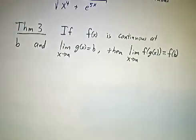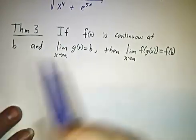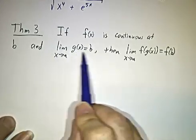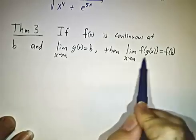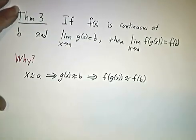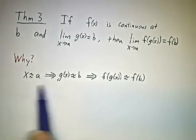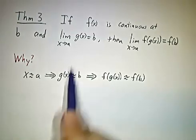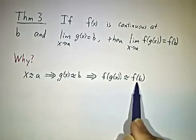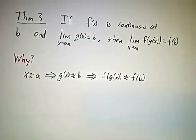Last, we can use these for continuity to compute limits. If f is continuous at b and the limit of g(x) is b, then the limit of f(g(x)) is f(b). Because if x is close to a, then g(x) is close to b, that's what this limit statement means. And so f(g(x)) is close to f(b), because f is continuous.